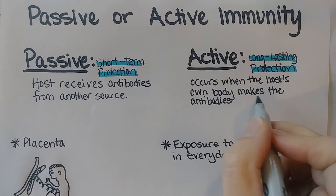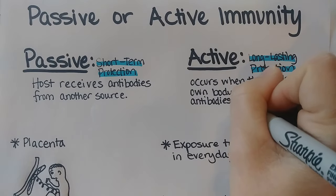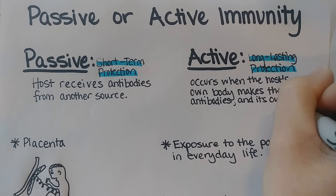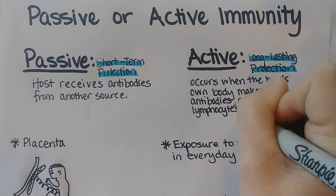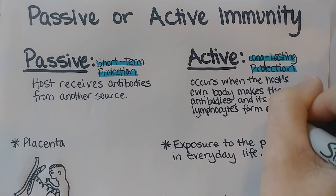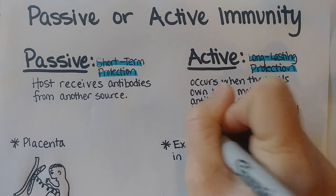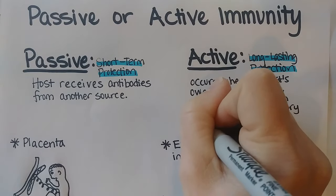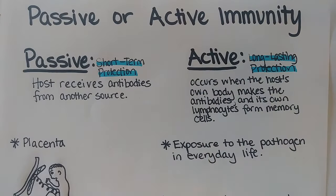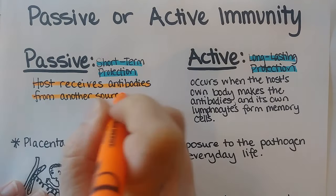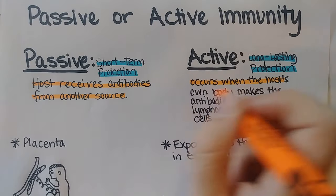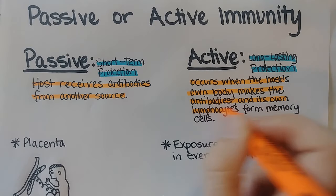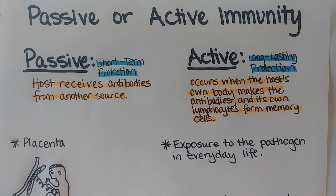Active immunity is when the host's own body makes the antibodies and its own lymphocytes form memory cells, giving you the ability long-term to respond. Passive is when the host receives antibodies from another source. Active is when its lymphocytes make the antibodies on their own and form memory cells that can respond down the road.